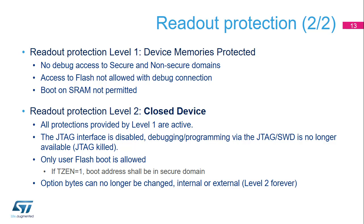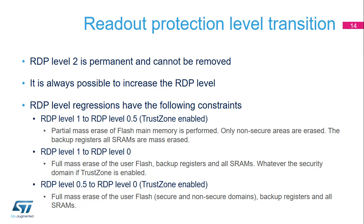Level 2 provides the same protection features for SRAM2, flash memory, and backup registers as described for level 1. However, there are two major differences. First, the JTAG/SWD debugger connection is disabled, even at the ST factory, to ensure there are no backdoors. Second, RDP and WRP option bytes can no longer be changed, as well as all other option bytes. RDP level regression is only possible in levels 1 and 0.5; level 2 is permanent and cannot be modified. Regression from level 1 or level 0.5 to level 0 triggers a flash mass erase, as well as erasure of backup registers and all SRAMs. Regression from level 1 to level 0.5, when TrustZone is enabled, triggers an erase of the non-secure domain. Backup registers and SRAMs are fully erased.